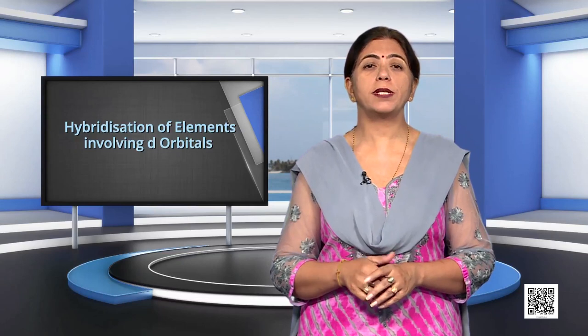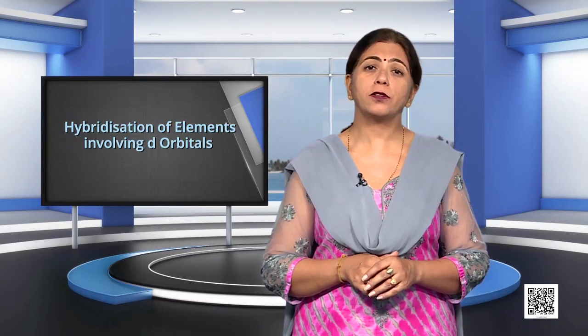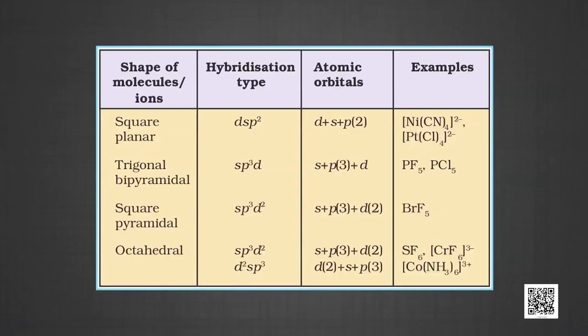Elements in the third period contain d orbitals in addition to s and p orbitals. The energy of 3d orbitals is comparable to that of 3s and 3p orbitals, and also comparable to those of 4s and 4p orbitals. As a consequence, hybridization involving either 3s, 3p and 3d, or 3d, 4s and 4p is possible. However, since the difference in energies of the 3p and 4s orbitals is significant, no hybridization involving 3p, 3d and 4s orbitals is possible. The important hybridization schemes involving s, p and d orbitals are summarized below.